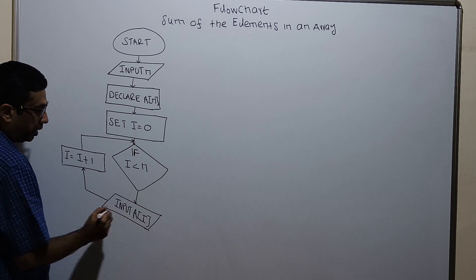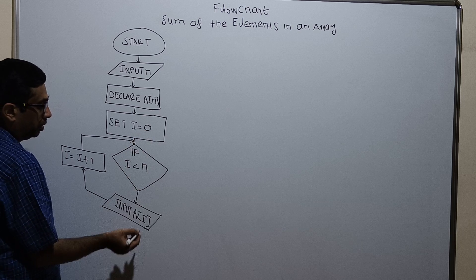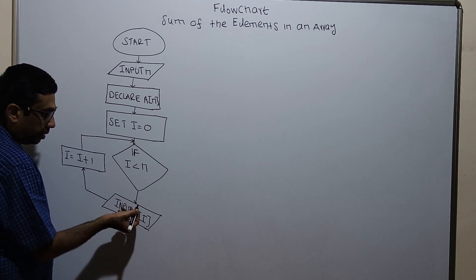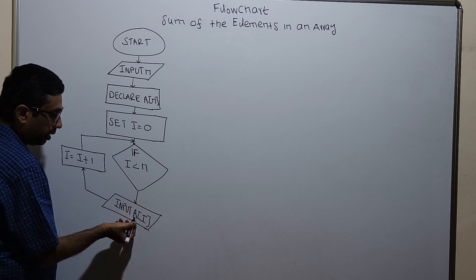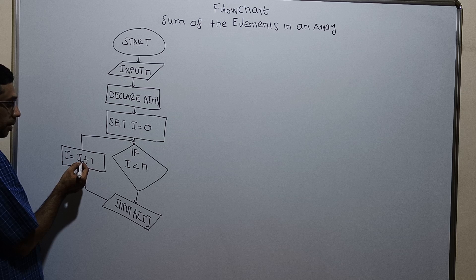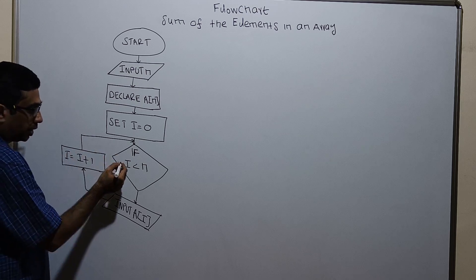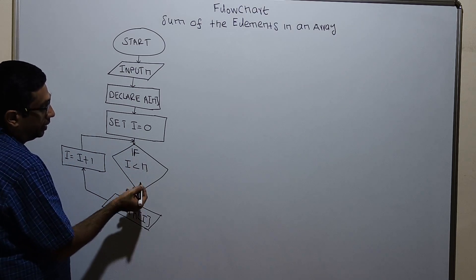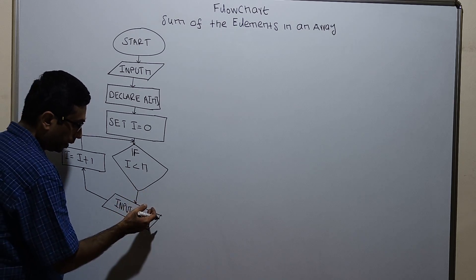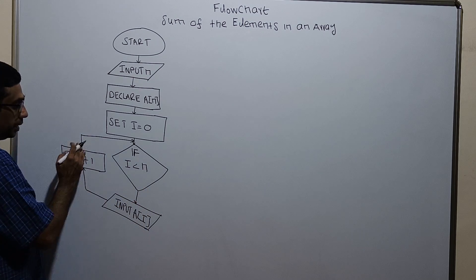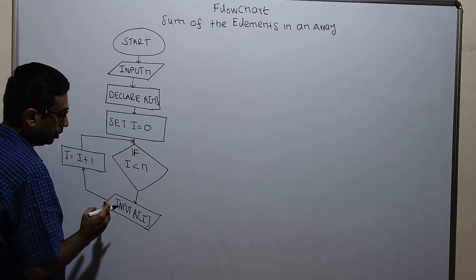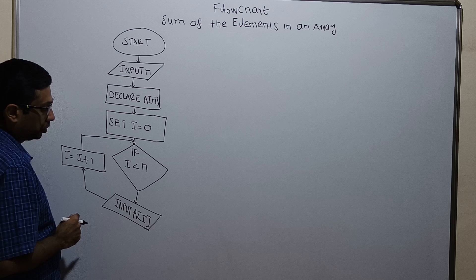If i less than n, input a of i. What is the initial value of i? i equal to 0. So input a of 0. That means the input for the array's index position 0 will get stored in this step. i will get incremented by 1. i is 1 now. It will check again: 1 less than n. It is true. Input a of 1, so value for index position 1 will get stored. Again i will be incremented. So this loop will store the array values from a of 0 to a of n minus 1.